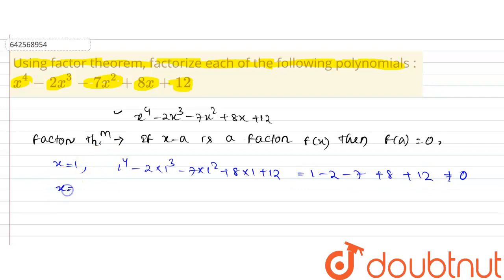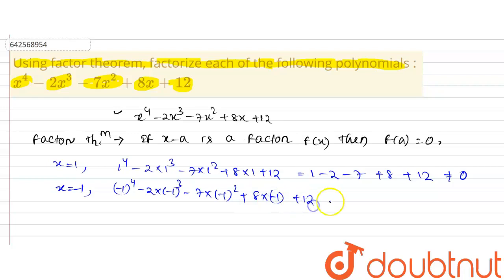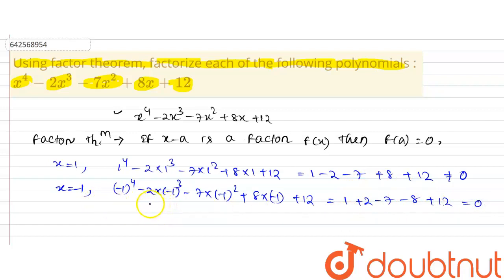Now I will calculate the value of the polynomial for x equal to minus 1: (-1)⁴ minus 2(-1)³ minus 7(-1)² plus 8(-1) plus 12, which equals 1 plus 2 minus 7 minus 8 plus 12, giving 15 minus 15, which is equal to zero. Therefore x equal to minus 1 makes the polynomial zero, so x plus 1 is a factor of this polynomial.